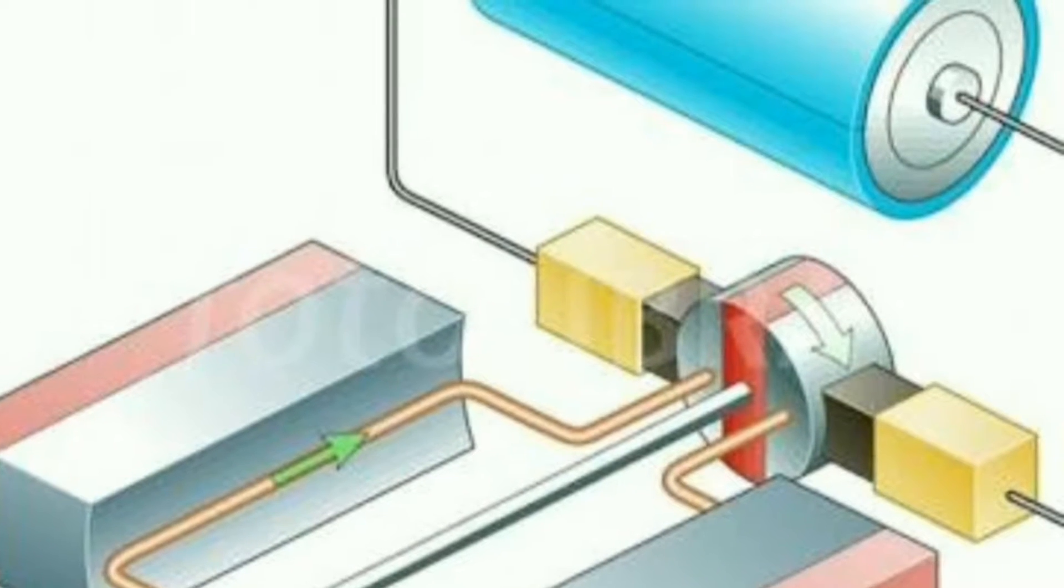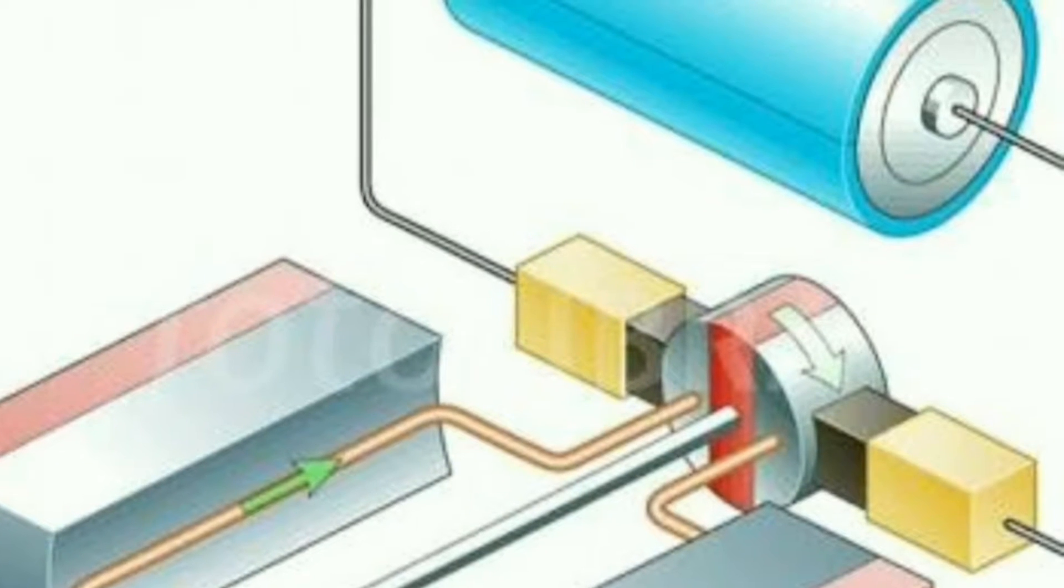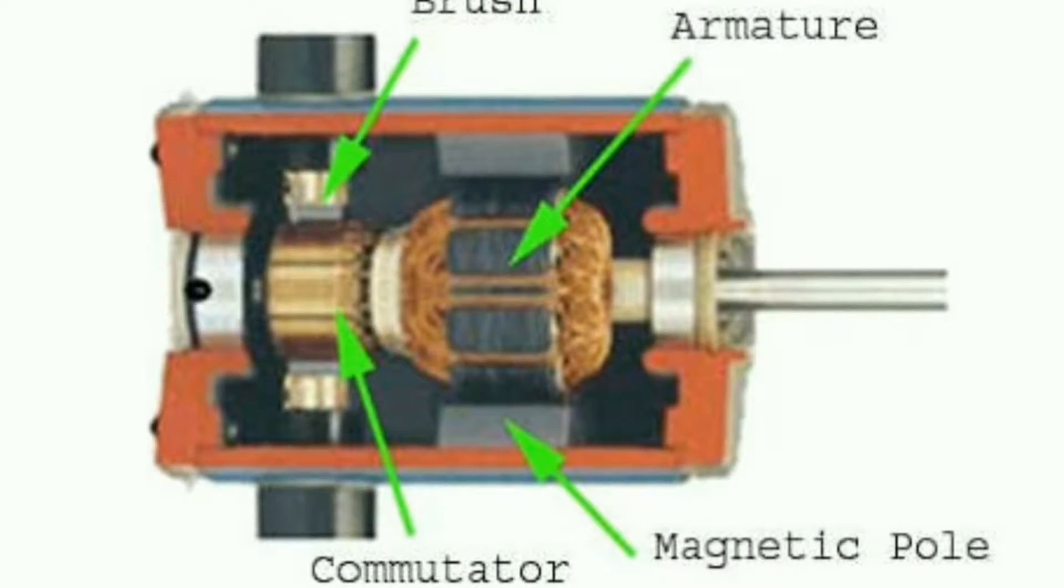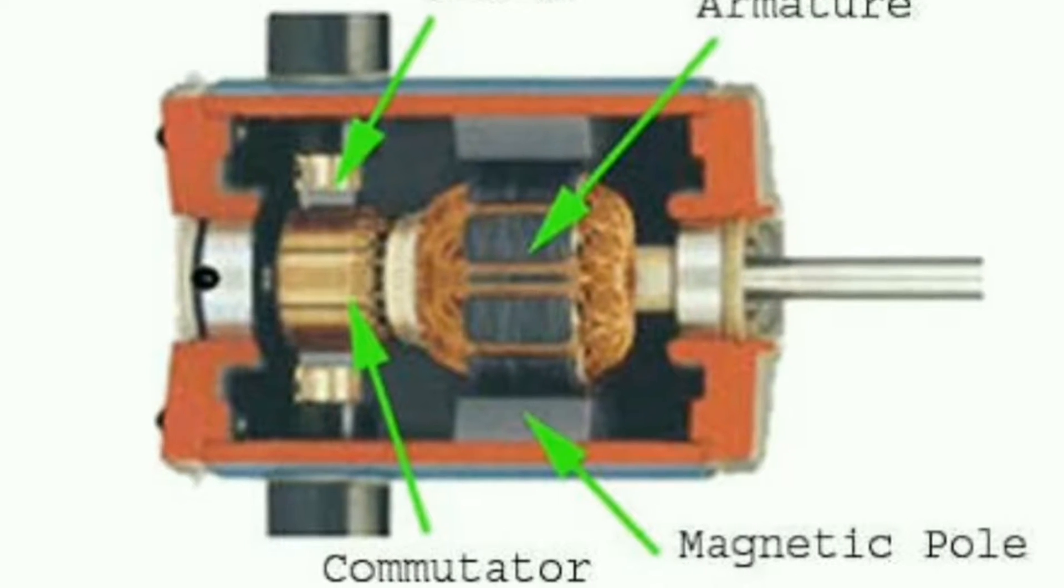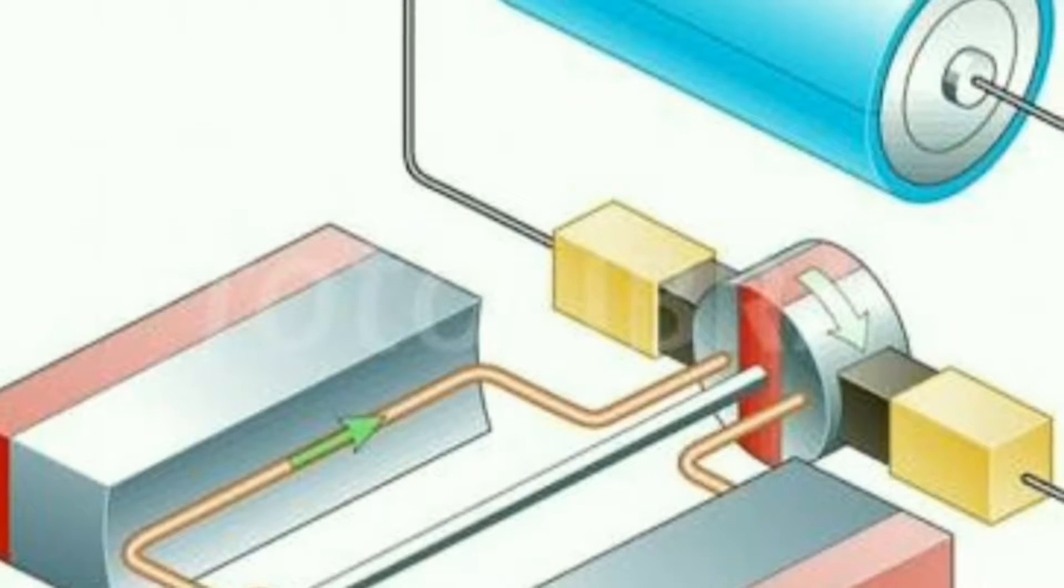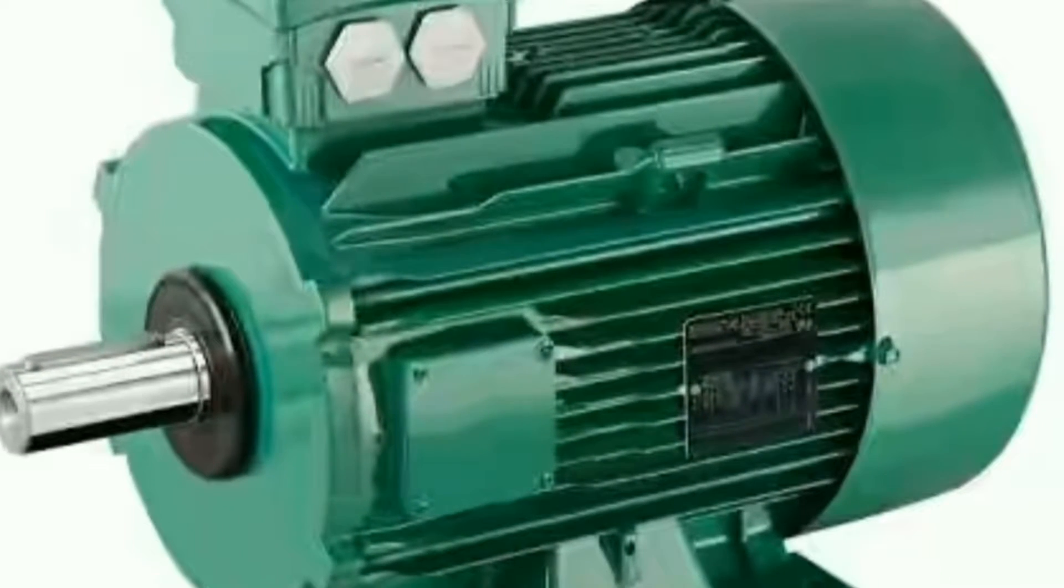So guys, as we all know that any object can be displaced from its position by the help of any force. Now in case of motor or generator, this force will be developed by the property of magnet. We know that the opposite poles of any magnets attract and the same poles repel.